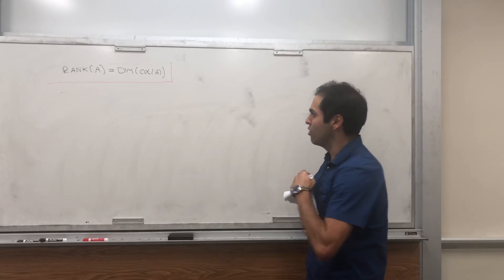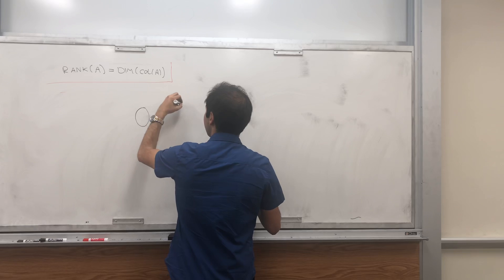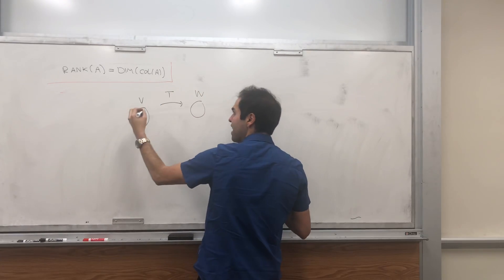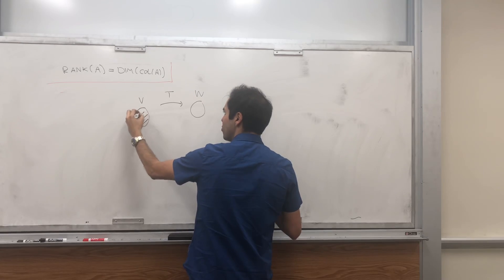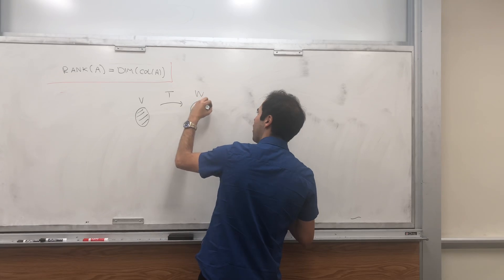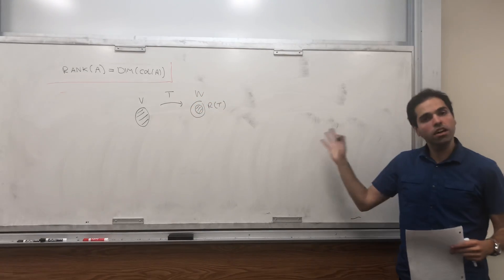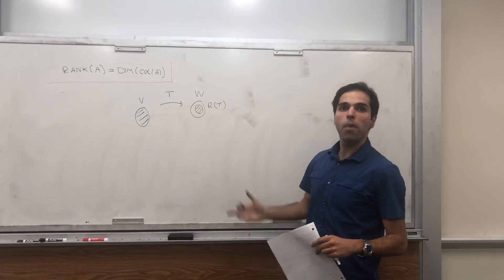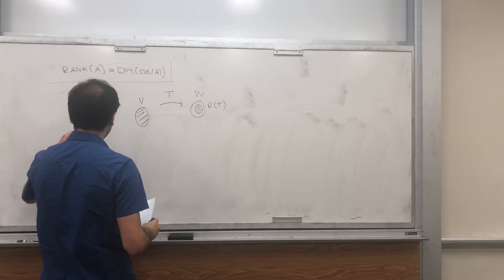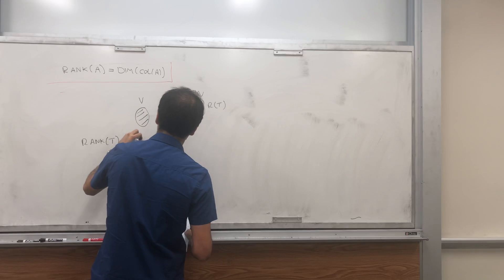The true definition is as follows. Given a linear transformation T from V to W, that linear transformation has a range — it takes all of V and maps it to a potentially smaller space, which is the range of T. In other words, the range of T is the set of all possible values of T. And then the rank of a linear transformation is just the dimension of that range.